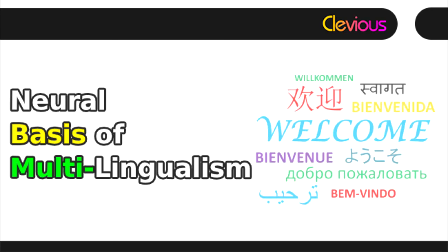Unconscious neural priming is language non-selective during bilingual word recognition in the left midfusiform gyrus, but exhibits a preference for L1 in the left posterior middle temporal gyrus. In summary, multiple factors influence the neural organization of language within an individual, such as age of acquisition, proficiency of the language, individual variability, etc.